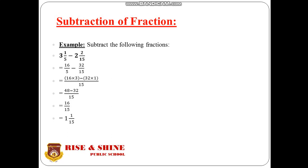The next concept is subtraction of fractions. For example, subtract: 3 whole 1 by 5 minus 2 whole 2 by 15. Again we convert the mixed fractions into improper fractions — the first becomes 16 by 5 and the second becomes 32 by 15. We take the LCM of 5 and 15, which is 15. The new numerators become 16 multiplied by 3 equals 48, and 32 multiplied by 1 equals 32. Subtracting gives 48 minus 32 equals 16 by 15, and converting to a mixed fraction gives 1 whole 1 by 15.